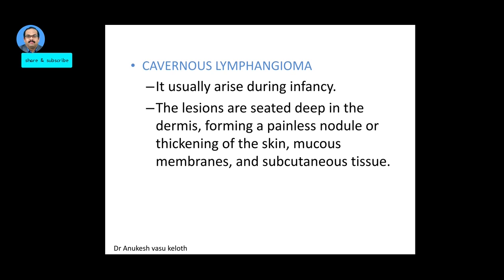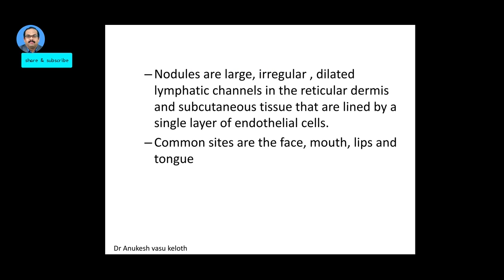The second variant is cavernous lymphangioma. It usually arises during infancy, that is the first year of life. The lesions are situated in the dermis and present as a painless nodule or a thickening of the skin, mucosa, and subcutaneous tissue. The nodules are large irregular dilated lymphatic channels in the reticular dermis and subcutaneous tissue, lined by a single layer of endothelial cells. Common sites are the face, mouth, lips, and tongue.